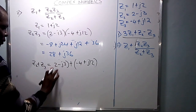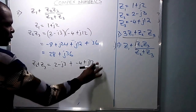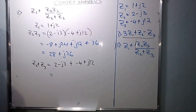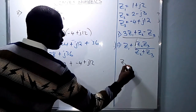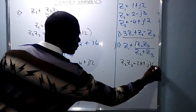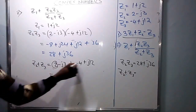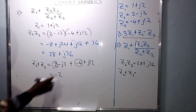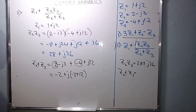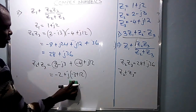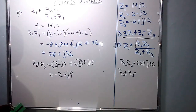Open the brackets. The positive sign does not affect the inside of the bracket. Collect the real parts: positive 2 and negative 4 gives negative 2. Collect the imaginary parts: negative j3 and positive j12, that is negative 3 and positive 12 gives positive 9, so we have positive j9. Therefore Z2 plus Z3 equals negative 2 plus j9.